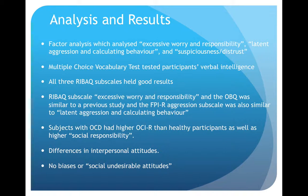The RIBAQ — Responsibility and Interpersonal Behaviors and Attitudes Questionnaire — subscale and the OBQ held results similar to a previous study, as well as the FPI-ARP, which is the Freiburg Personality Inventory Revised Aggression subscale. This added to the validity of the subscales because they were corroborated. Subjects with OCD had higher OCI-R and social responsibility scores in comparison to healthy participants, which proved part of the hypothesis. The results showed differences in interpersonal attitudes, though there weren't specific differences in openness between OCD patients and healthy participants.